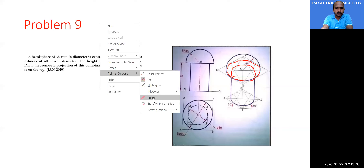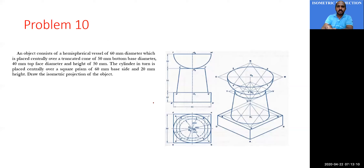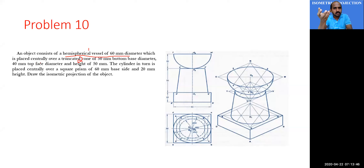Problem number 10 is a combination of three solids. An object consists of a hemispherical vessel of 60 mm diameter placed entirely over a truncated cone. The truncated cone has a base diameter of 50 mm, top diameter of 40 mm, and height of 50 mm. The truncated cone is placed entirely over a square prism of 60 mm base side and 20 mm height. Draw the isometric projection.